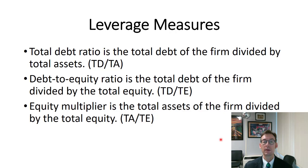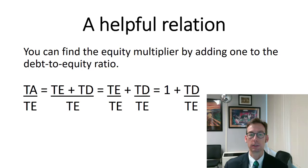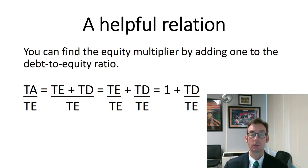The more leverage a firm has in their capital structure — in other words, the more debt they have — the higher this equity multiplier will be. Here's a helpful relation that's going to help us complete this calculation more easily: the equity multiplier is just one plus the debt to equity ratio.